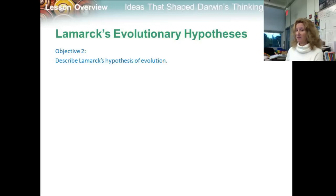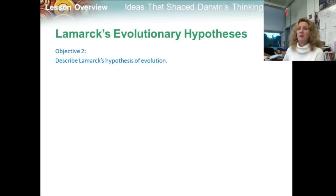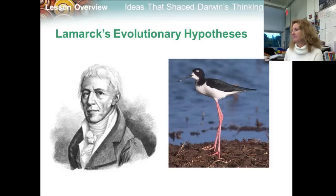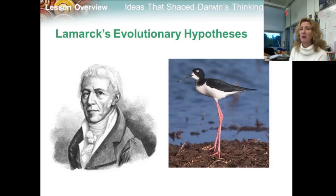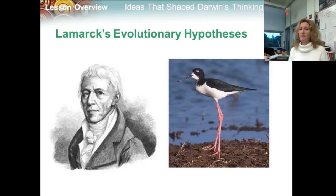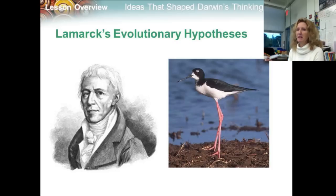Let's look at Lamarck's hypothesis of evolution. This guy was a forward thinker — he wasn't afraid to say what he was thinking, but he wasn't entirely right either. Darwin wasn't the first scientist to suggest that characteristics of species could change over time. That was kind of huge for Lamarck, because in his day and age, the prevailing view was that God made everything just the way it was, nothing's going to change. Lamarck thought, hmm, maybe not. So he did have an influence on Darwin's thinking.